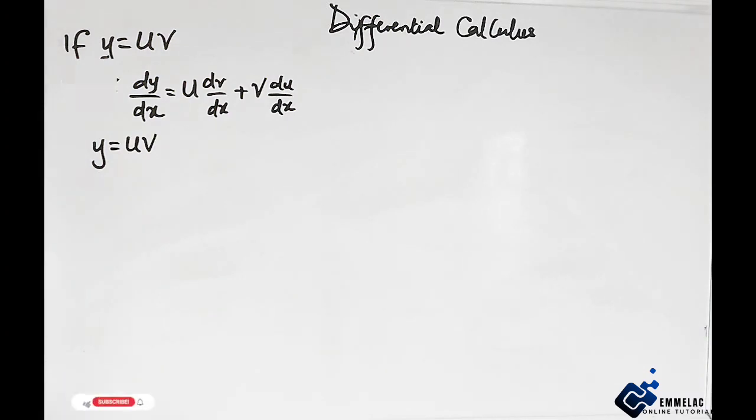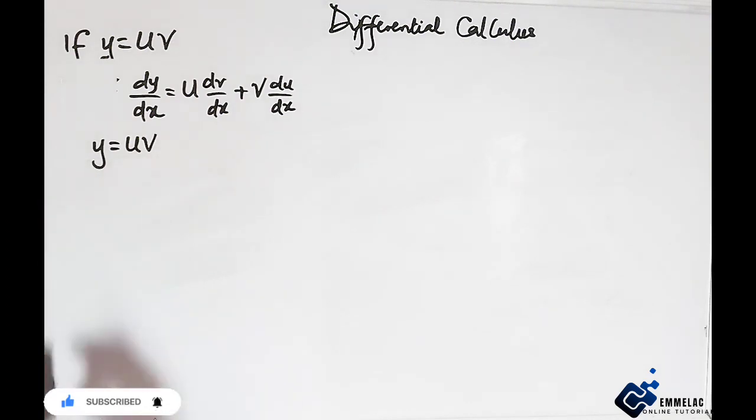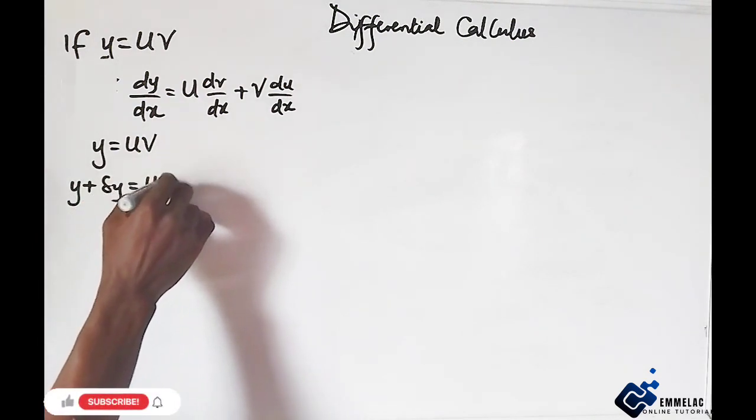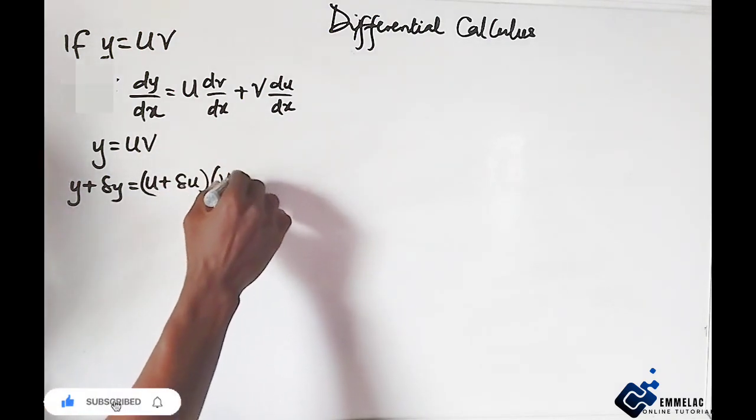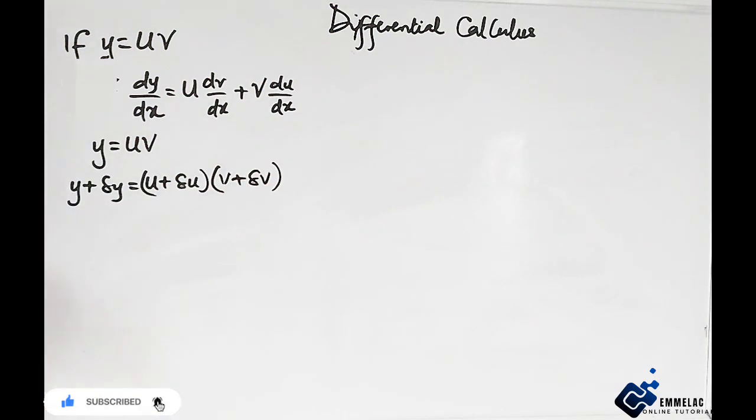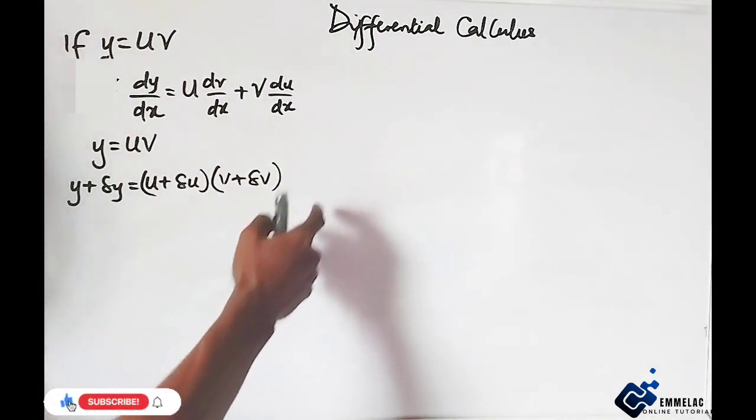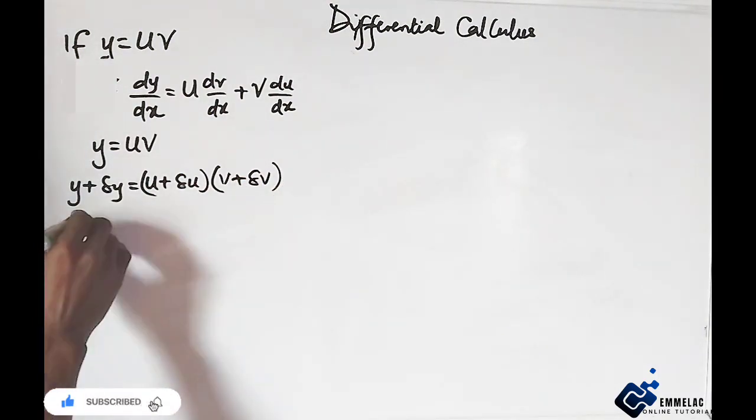The next step here is to make change in y the subject of the relation, which implies that we're going to take y over to the right hand side. When it happens, y becomes negative at the right hand side. So here we have change in y equals u plus change in u, open bracket, v plus change in v, close bracket, minus y.